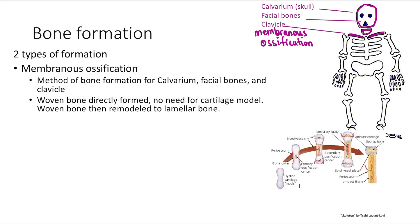The first one is called membranous ossification. Pay attention to the names. Membranous ossification is what's used for the skull — everything in purple here is membranous ossification — facial bones, and clavicle. In membranous ossification, you have woven bone, which is directly formed. There's no need for a cartilage model, and this woven bone is then remodeled to lamellar bone.